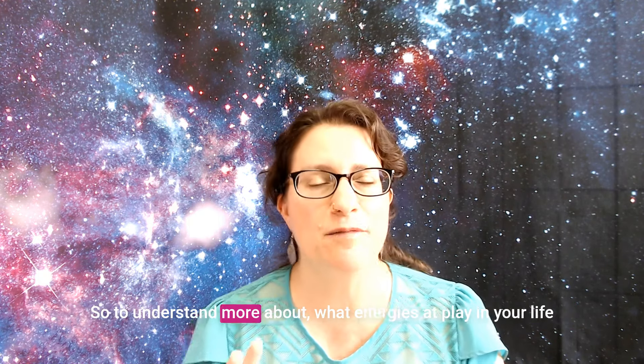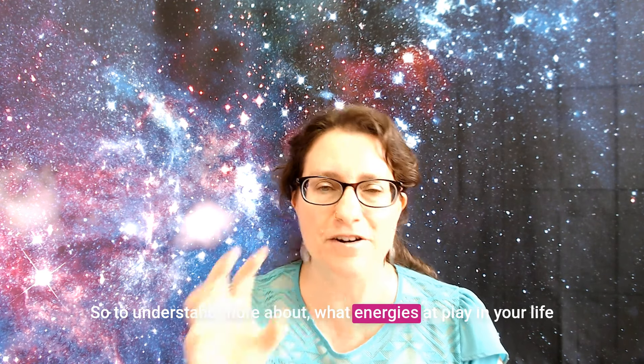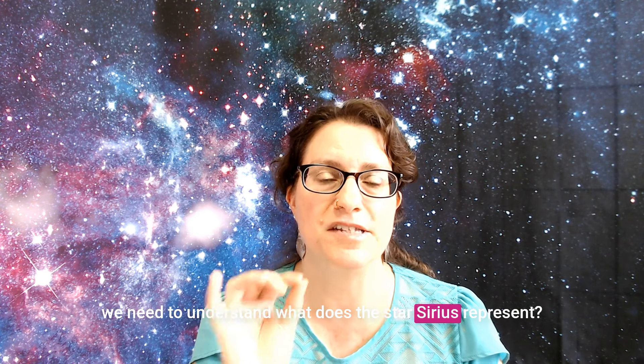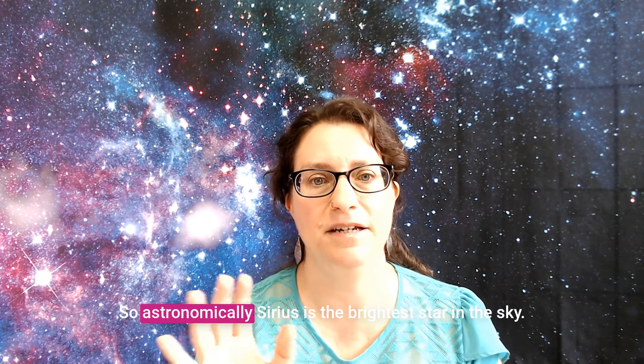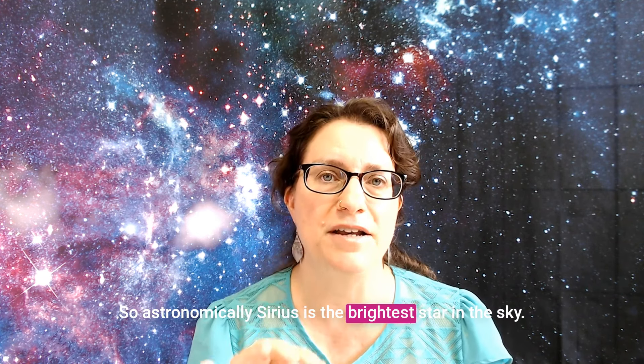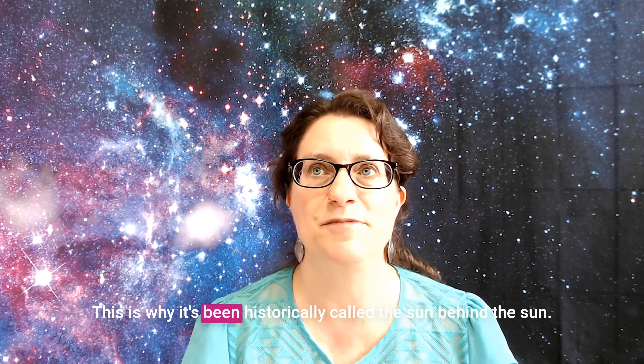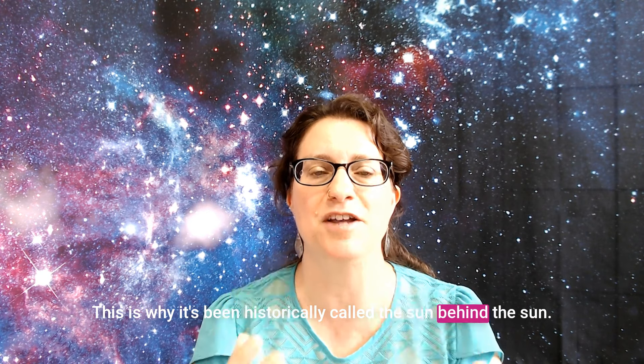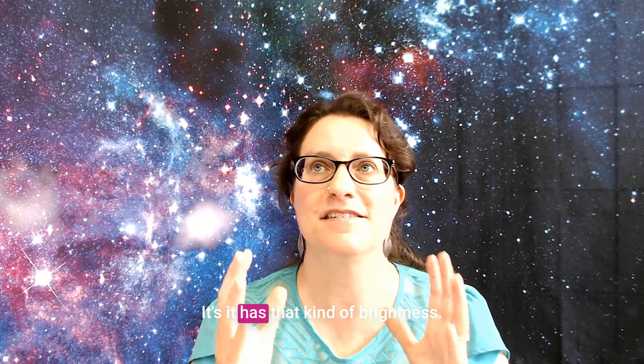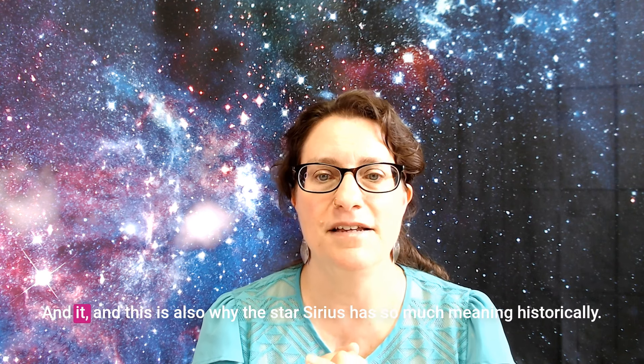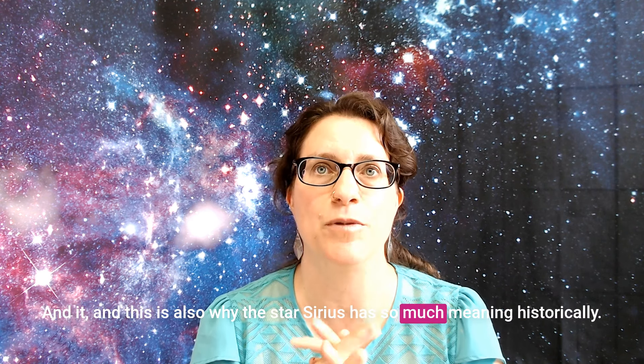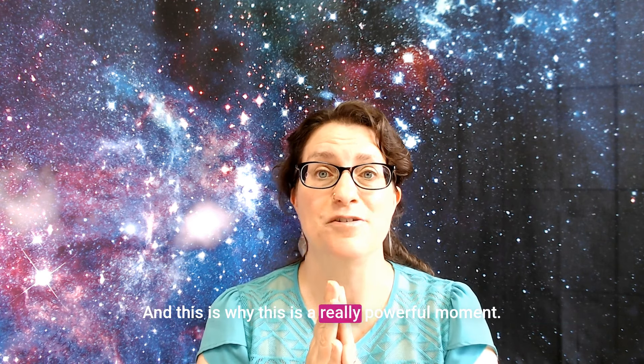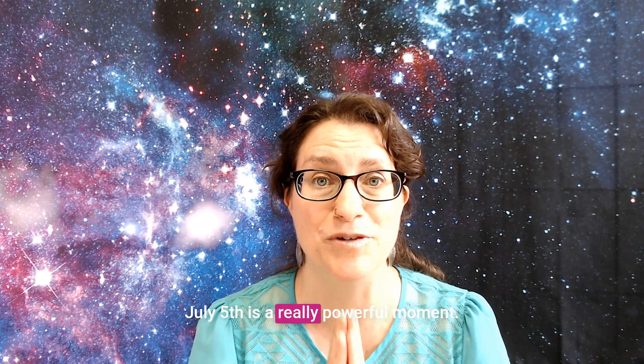So to understand more about what energies that play in your life, we need to understand what does the star Sirius represent. So astronomically, Sirius is the brightest star in the sky. This is why it's been historically called the sun behind the sun. It's so bright, right? It has that kind of brightness. And this is also why the star Sirius has so much meaning historically. And this is why this is a really powerful moment. July 5th is a really powerful moment.